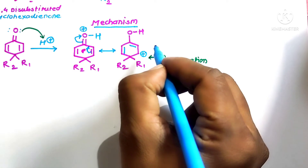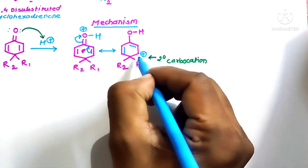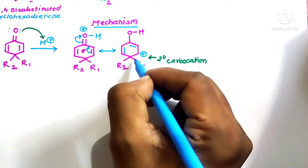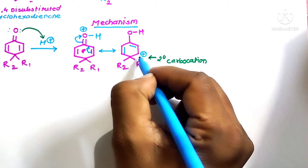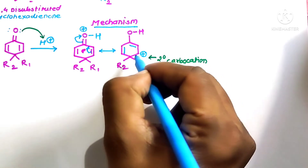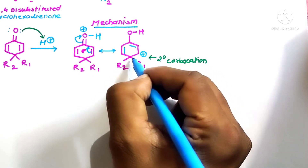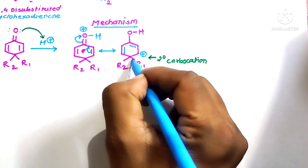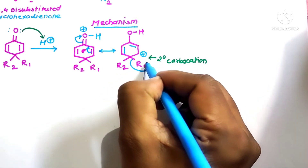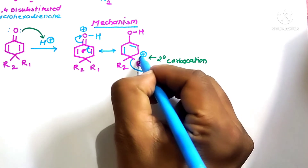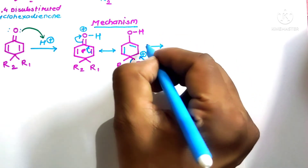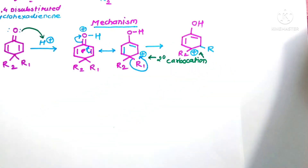Because a tertiary carbocation is more stable than a secondary carbocation, a 1,2-shift takes place. The R1 group shifts from carbon number 4 to carbon number 3, forming a more stable tertiary carbocation ion.